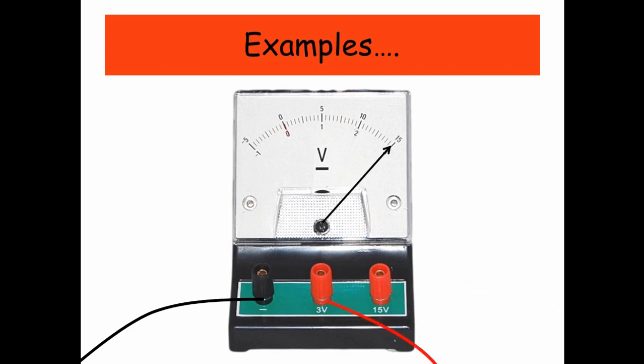Now this time, if you look at the bottom, the positive terminal is now connected to the 3 volts. So we're not using the top scale, we're using the bottom scale. This time it's not pointing at 1 or 2, it's pointing at 3. So this voltmeter is reading 3 volts.